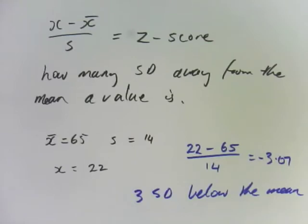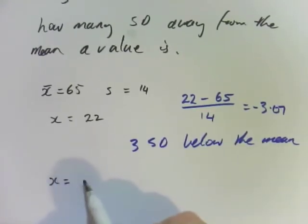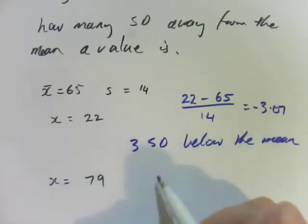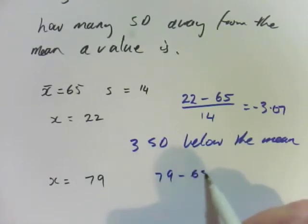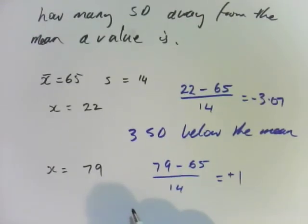Another example would be if we use the same standard deviation and the same mean. If I wanted x to be 79, we do 79 minus 65 divided by 14. And if we work that out, we come out at 1. Now that's actually a plus 1, which means that this one is exactly one standard deviation above the mean.